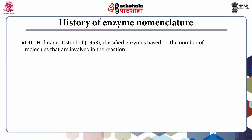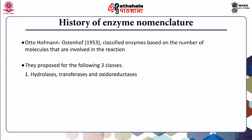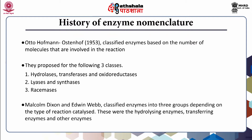Otto Hoffman Austin Hoff classified enzymes based on the number of molecules involved in the reaction in 1953. They proposed three classes: hydrolases, transferases, and oxidoreductases; lyases and synthases; and isomerases. Malcolm Dixon and Edwin Webb classified enzymes into three groups depending on the type of reaction catalyzed: hydrolyzing enzymes, transferring enzymes, and other enzymes.